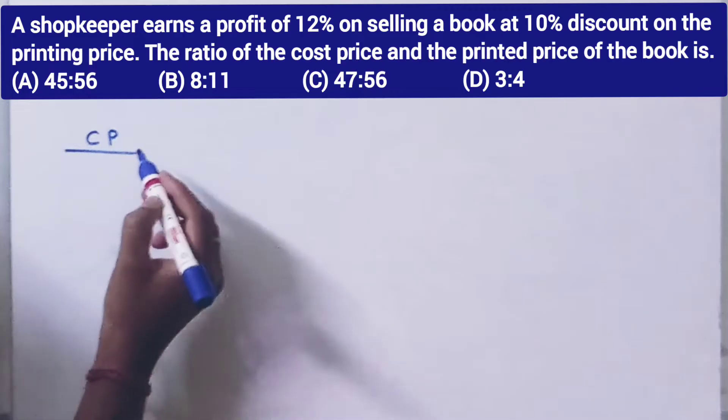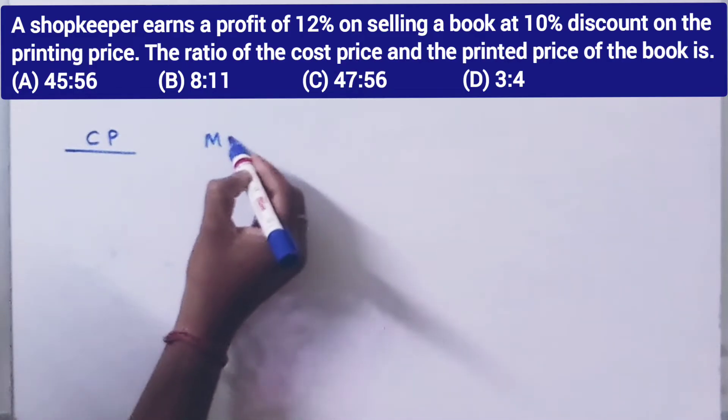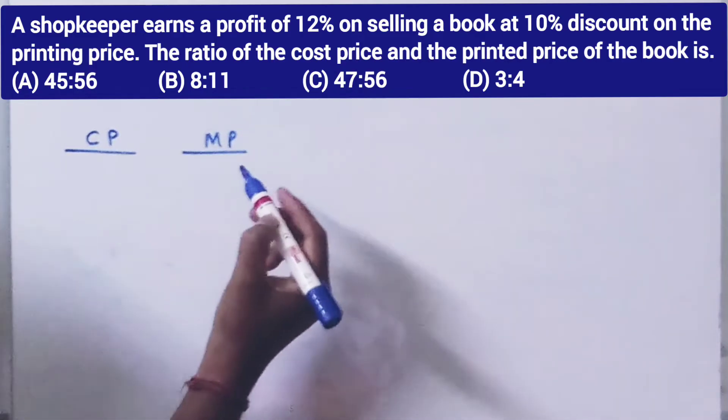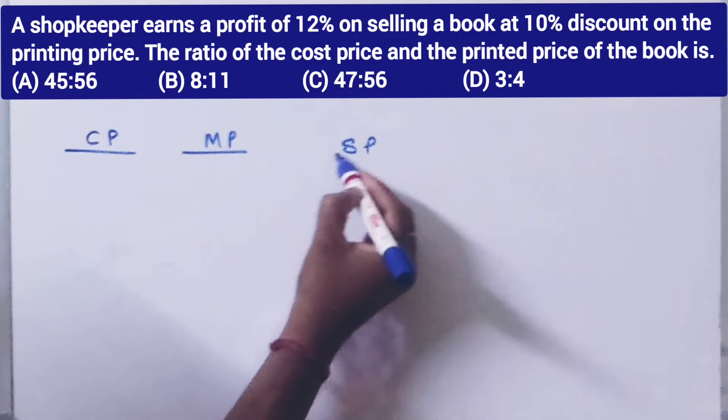So, this is the cost price. Then, mark price. And this is the selling price.